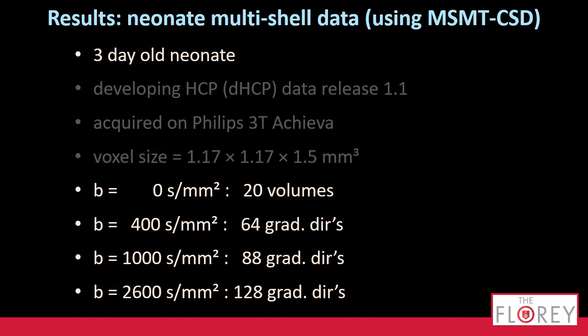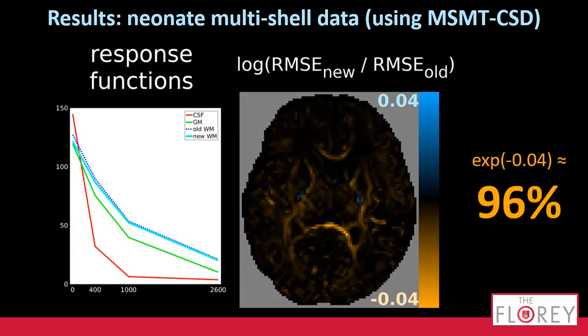Final data set of the day — neonate data. This is downloaded from the developing HCP project, so you can find this online and download it and play around with it for yourself. The data set here is a three-day-old neonate with a very comprehensive multi-shell acquisition. If we look at the difference between old and new white matter response functions, it's actually not that much. But it still works well — it still strictly improves, albeit just a tiny, tiny bit. Only 4% off, bringing the root mean square error down to 69%. It still works and it's still robust — I think that's the main thing we care about.